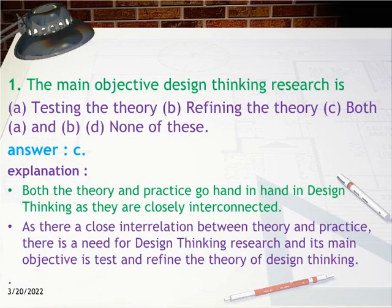Question 1: The main objective of design thinking research is: a) testing the theory, b) refining the theory, c) both a and b, d) none of these. Answer: c. Explanation: Both theory and practice go hand in hand in design thinking, as they are closely interconnected. Due to this close interrelation, the main objective of design thinking research is to test and refine the theory of design thinking.